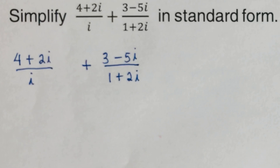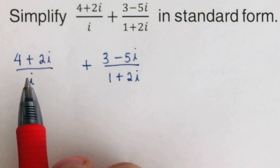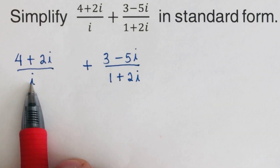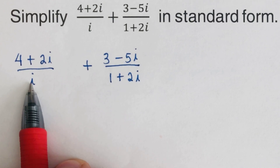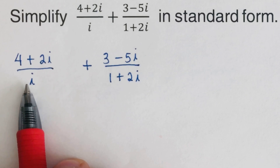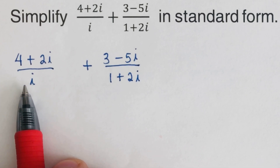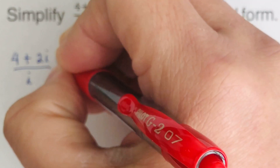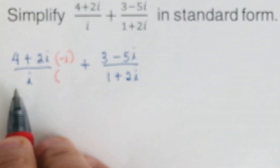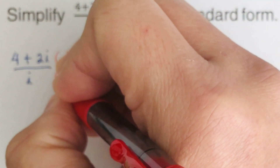In the first step we multiply the given expression by its conjugate. Since the denominator here is i — we switch the sign of the bi part — this is essentially one times i, but the one is invisible. So we multiply both the numerator and denominator by negative i. We switch the sign of the bi part, giving us negative i.